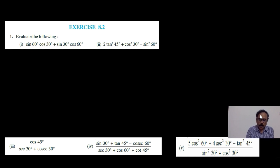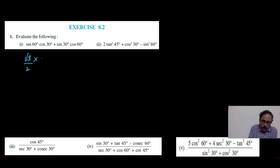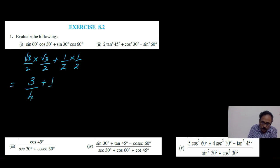Let us solve the problems of exercise 8.2. sin60 is root 3 by 2 into cos30 is again root 3 by 2, and sin30 is half and cos60 is again half. Therefore it is root 3 into root 3, which is 3 by 4, plus 1 by 4. The LCM is 4, and 3 plus 1 is 4 by 4. Therefore the answer is 1.